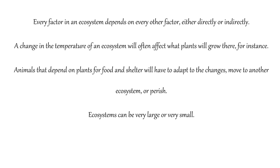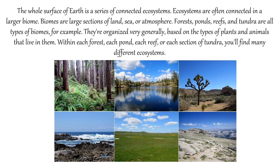Ecosystems can be very large or even very small. The whole surface of the earth is a series of connected ecosystems. Ecosystems are often connected in a large biome. Biomes are large sections of land, sea or atmosphere. Forests, ponds, reefs and tundra are all types of biomes, for example. They are organized generally based on the types of plants and animals that live in them. Within each forest, each pond, each reef or each section of tundra, you will find many different ecosystems.